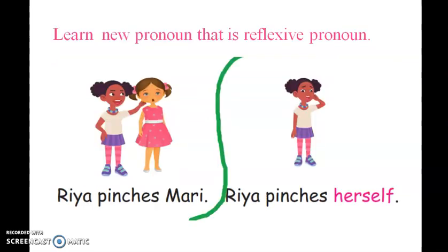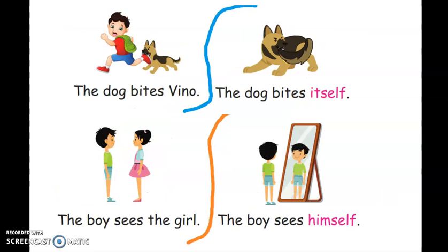Land new pronoun, that is reflexive pronoun. Via pinches Mary. Via pinches herself. So this is reflexive pronoun. Herself, itself. The dog bites itself. The boy is himself.